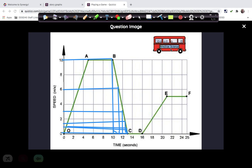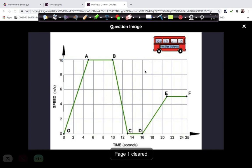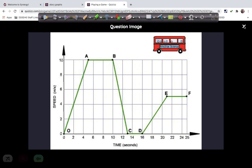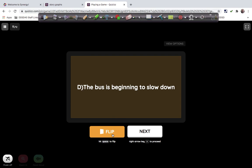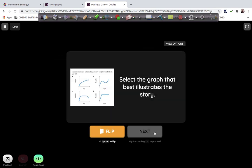So we think that what happens with this bus between B and C is that it slows down to a stop. Because its speed goes to zero. And the bus is beginning to slow down. And in fact, it comes to a stop.